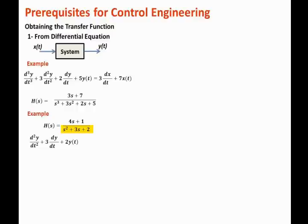Continuing, the plus 2 becomes plus 2y of t. So we took the denominator and made it the output derivative terms, replacing s to the n by the nth derivative of the output. Those output derivative terms equal the input derivative terms from the numerator: 4s plus 1 becomes 4 dx/dt plus x of t. So if you have a differential equation, you can get the transfer function, and vice versa.